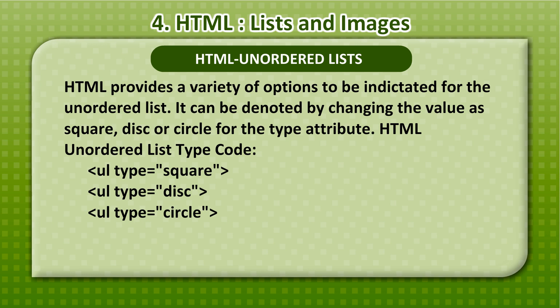The unordered list can be customized by changing the value of the type attribute to square, disk, or circle. The HTML unordered list type code demonstrates these three options.